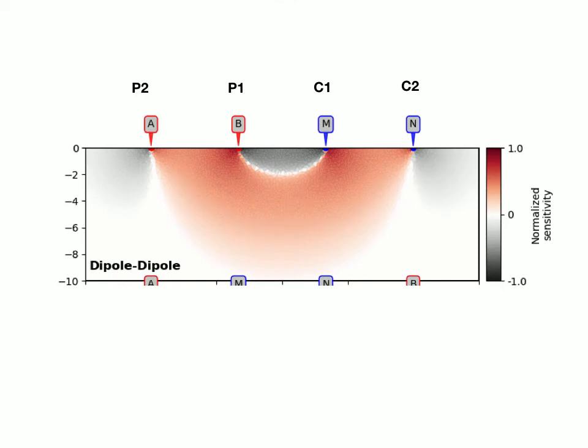This is the sensitivity of the dipole-dipole array to the conductivity structure underneath. So we're sending a current into the ground on one side and reading the potentials of the other.